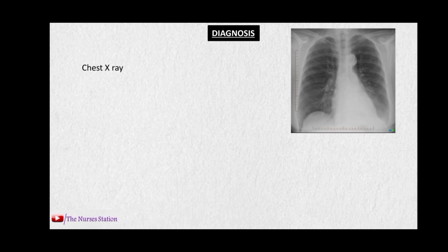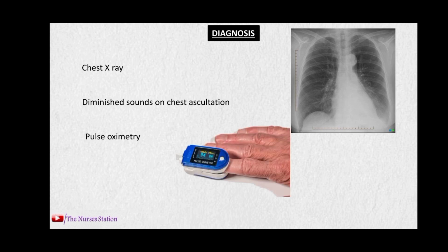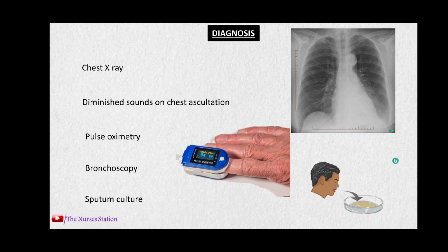To diagnose atelectasis: a chest X-ray can be used where the atelectatic or collapsed lung parts are visible. Chest auscultation reveals diminished sounds in the affected parts because there is no air movement in and out of these parts. A pulse oximeter can be used to measure the level of oxygen in the blood. Bronchoscopy can be used to look into the airways and find any blockages or obstructions. Sputum culture can be used to find out if there is any bacterial infection causing these signs and symptoms.